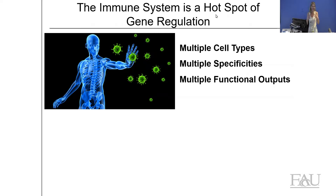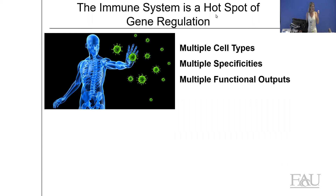My interest for many years has been at the interface of RNA processing and the immune system. Why study these two things in combination? The immune system is very complex, comprised of multiple cell types — B cells, T cells, macrophages, monocytes — each responding to different stimuli such as viral or bacterial pathogens. These multiple cell types have multiple specificities and have to respond very precisely and robustly to a variety of different stimuli.